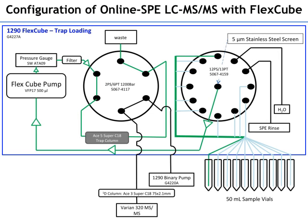In the sample loading configuration, we're using the FlexCube pump to draw a sample out of the first tube, go into this valve, and pull it into the SPE cartridge — just a guard column with five-micron particles in a one-centimeter long cartridge. The excess goes to waste. In most of our work we've been pulling in five milliliters of each sample, and the most we've done is maybe 10 milliliters. Basically it's just limited by how long you want to wait. The pump capability is four milliliters per minute at the top end at 60 bar, so how much you can load is simply a function of time and cartridge dimensions.